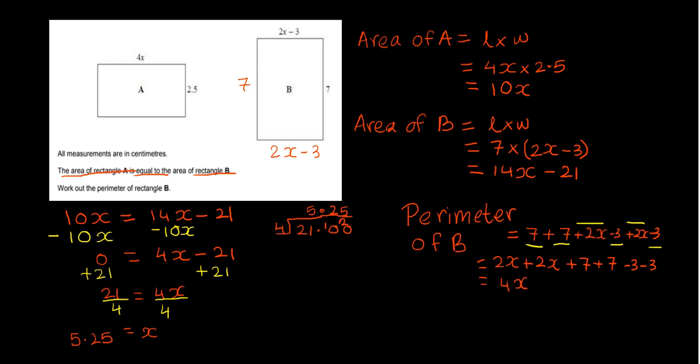So I'll have 2x plus 2x plus 7 plus 7 plus another 7, and the sign belongs to the number, so minus 3 minus 3. That's going to give me 4x, and 7 plus 7 is 14, and 14 minus 3 is 11, minus 3 is 8, so it's 4x plus 8.